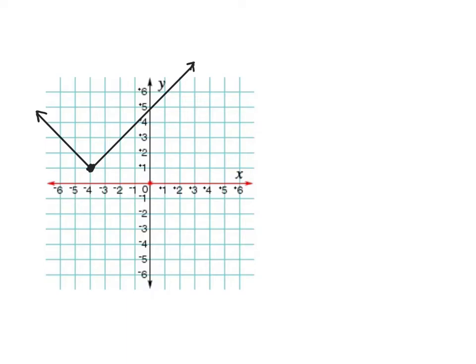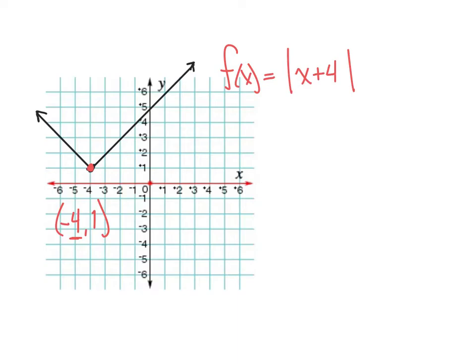We could even work backwards. What if I have a graph — can we come up with the equation of this graph? Well, sure we can. First of all, this function has that distinctive V shape to it, so it's got to be an absolute value function. But check out where that vertex is — the ordered pair for that vertex is at negative 4, 1. Which means on the inside of our absolute value, we're going to do the opposite of that — we're going to add 4, because negative 4 plus 4 would make 0. And this vertex got shifted up 1 unit, so on the outside of the function, we're going to add 1. And this will be our function for this graph.